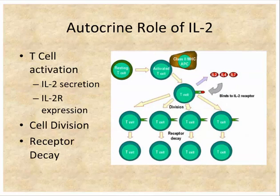In the case of T cells, IL-2 works in an autocrine role. When a T cell gets activated by receiving antigen, it begins to express the receptor for IL-2 and also secretes IL-2. The IL-2 then works in an autocrine fashion to drive division of that cell. As the cells lose that receptor, they're no longer susceptible to IL-2 and stop dividing — one of the ways the immune response is dampened.